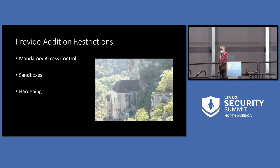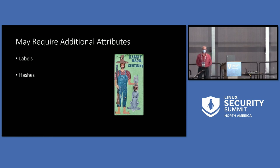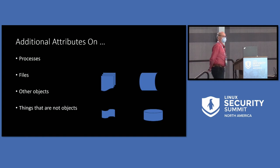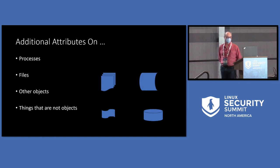Sometimes when you want to do something different, you need to introduce some additional attributes. If you're doing mandatory access control, you might want to have a label on a file. If you're doing integrity measurements, you might want to have a hash of some sort associated with a file or a process. There are all kinds of attributes you could add — timestamps and all kinds of things. You're going to put those attributes on processes, files, other system objects, and things that are not objects, like port numbers. You might want to put a security label on a port or do an integrity measurement on a tape drive for some reason.